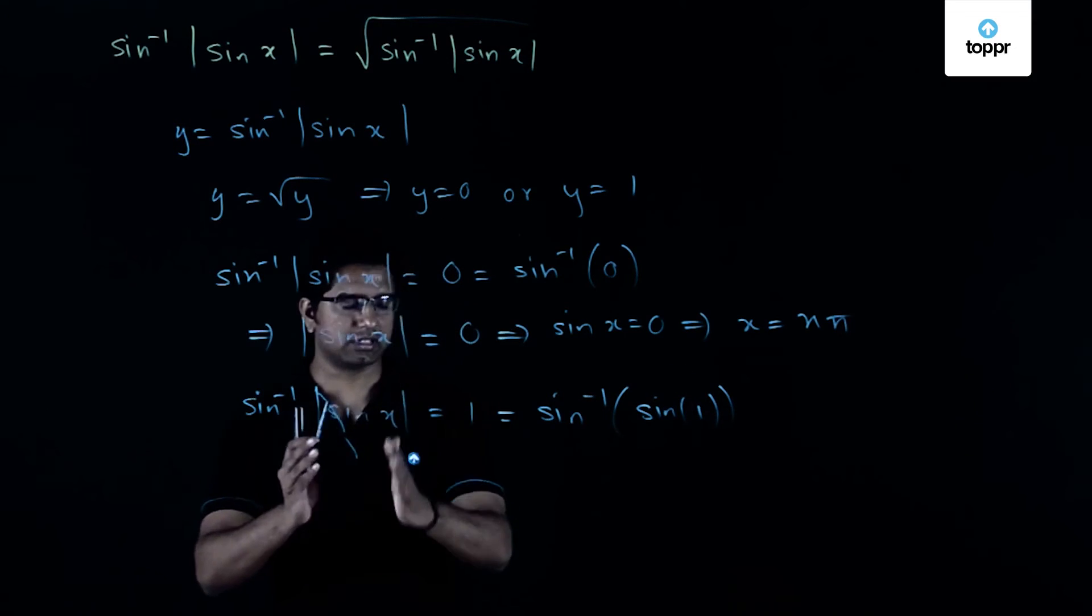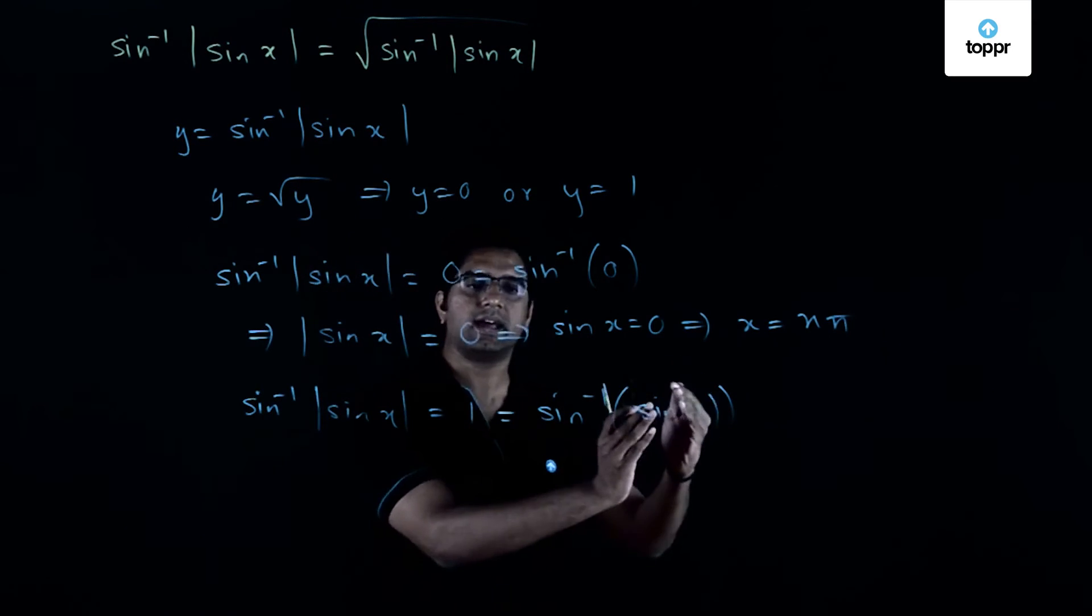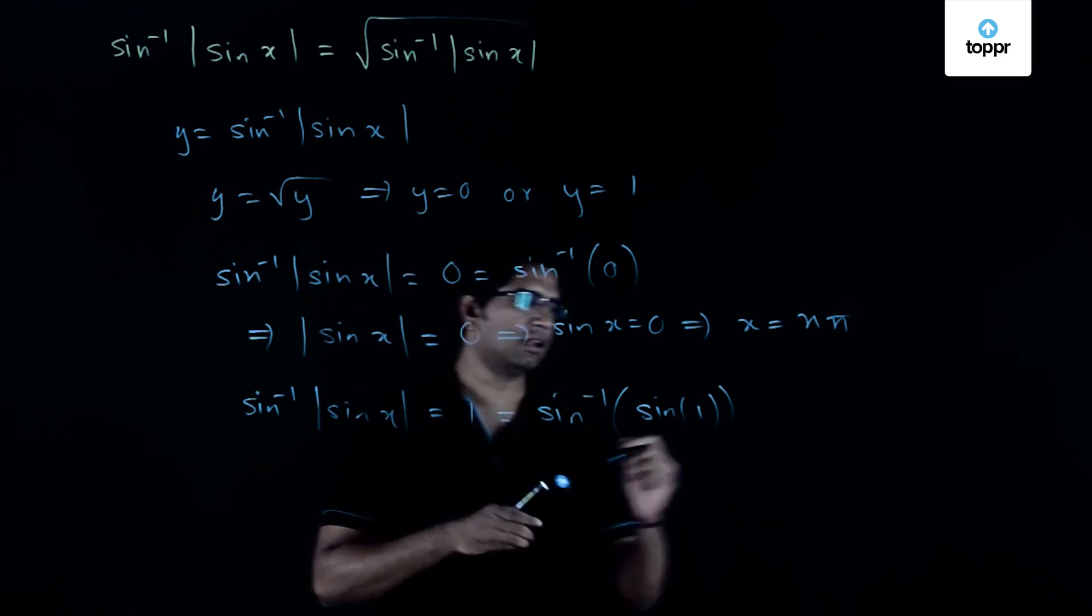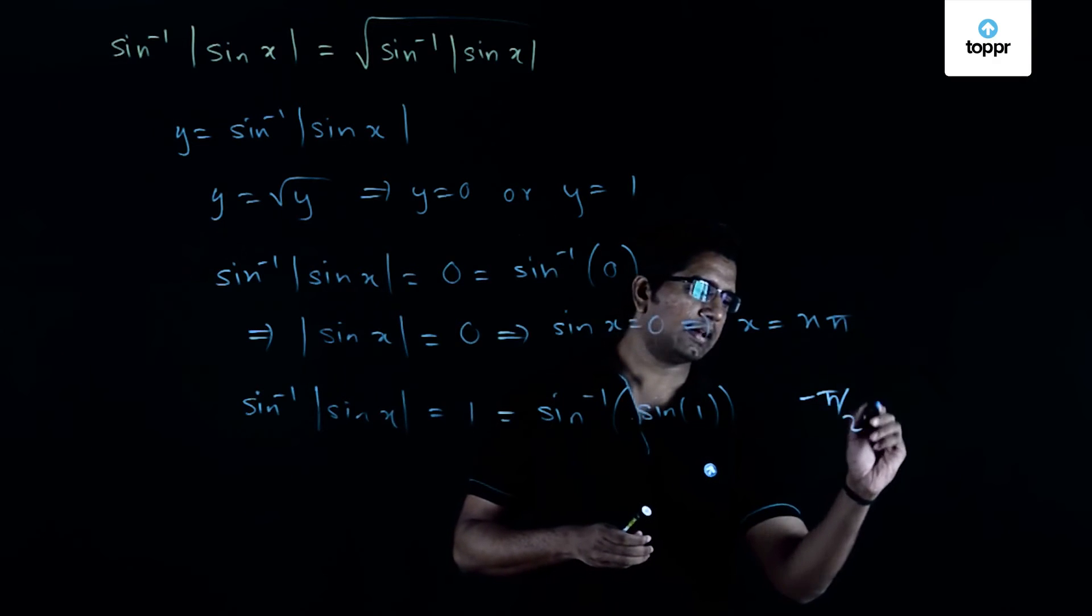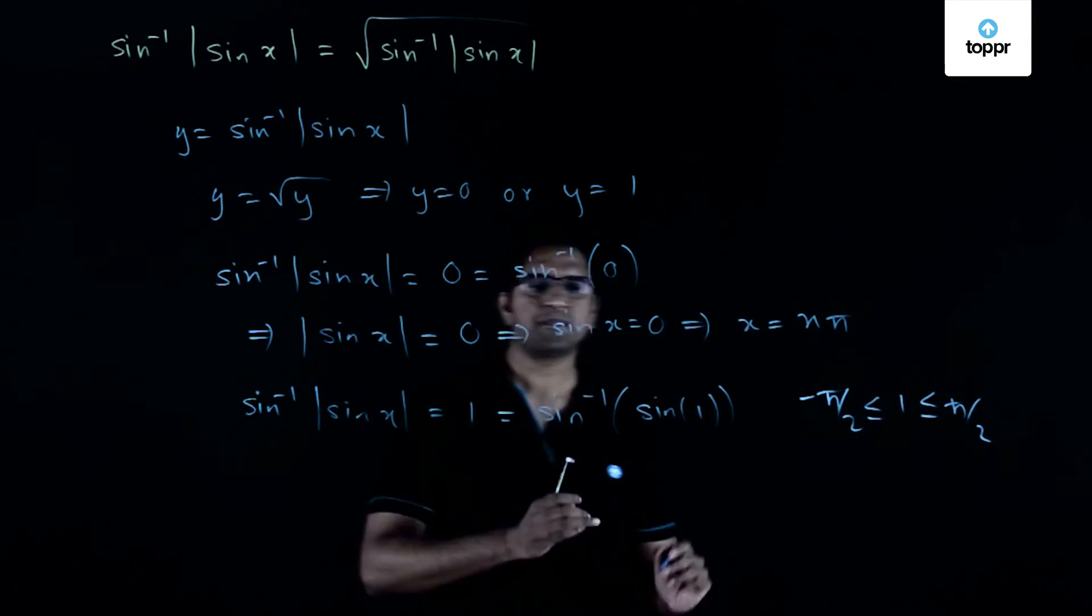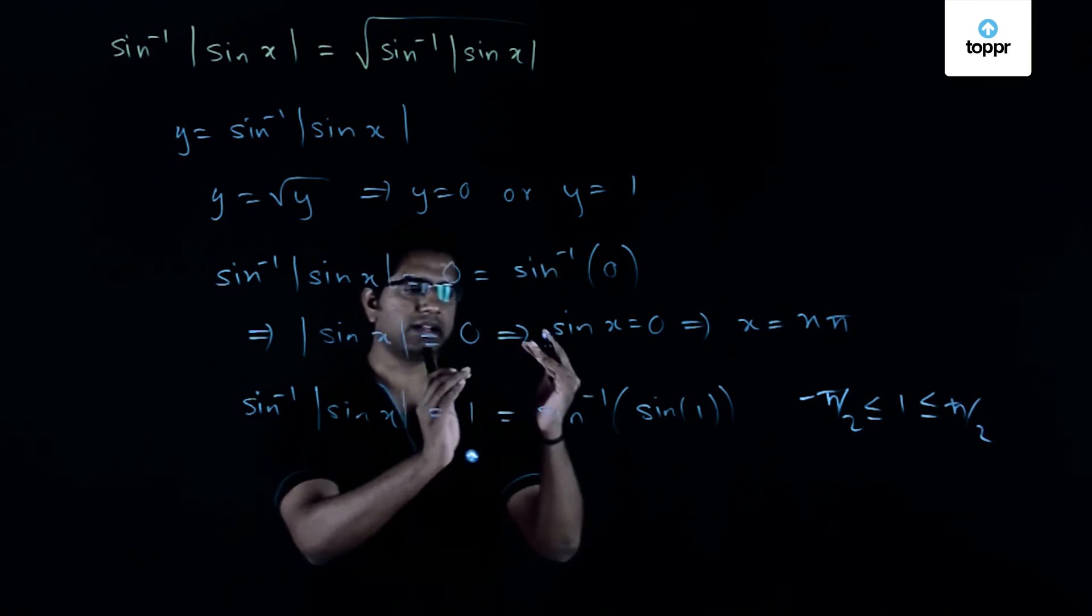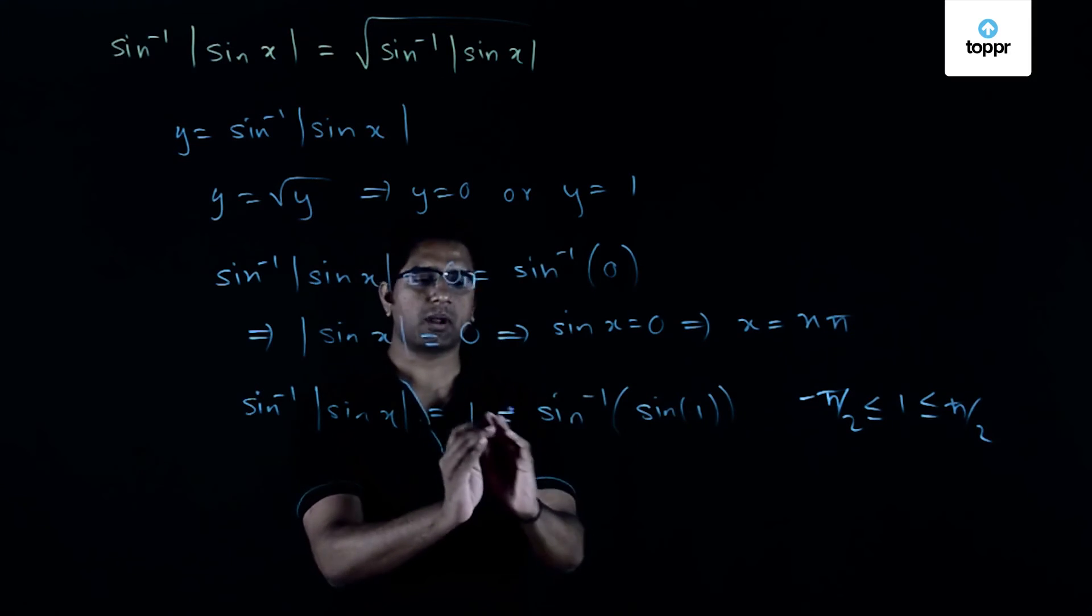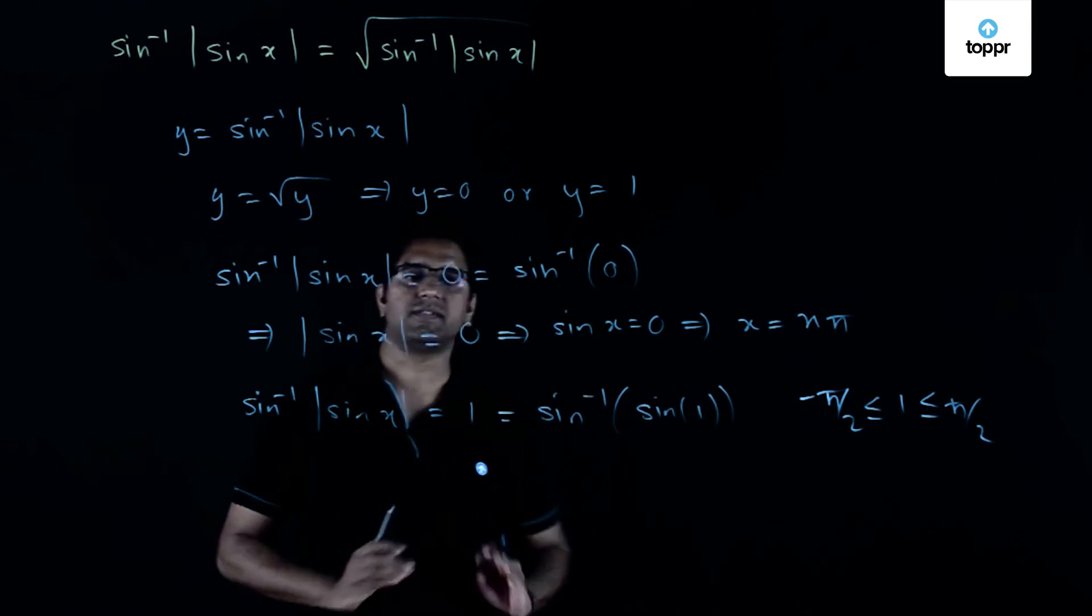This is possible because 1 is lying in the principal domain of sine inverse, that is minus pi by 2 less than, which is the principal domain of sine inverse. That is the reason why I am able to write sine inverse of sine theta equals theta. I am making use of that property to write this part of the function here.